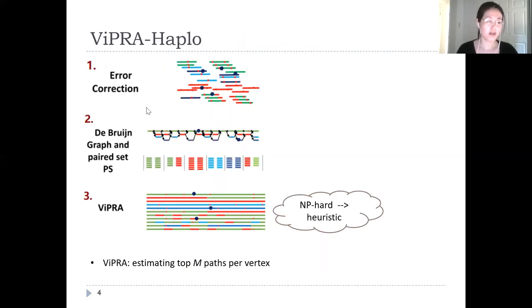We propose ViPRA-Haplo for viral haplotype reconstruction. In the first step, we use error correction software to improve assembly. Then the error corrected reads are characterized and stored in a de Bruijn graph. The paired reads in the graph are stored in the pair set PS.